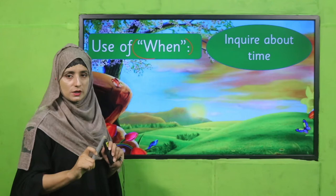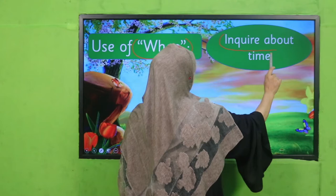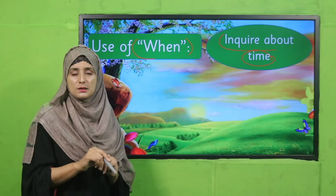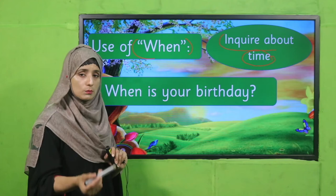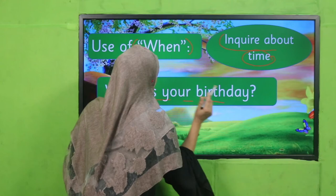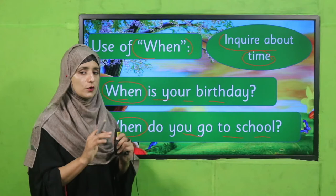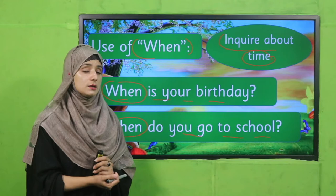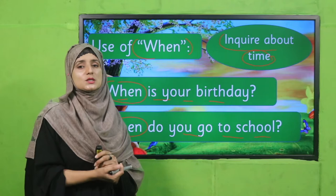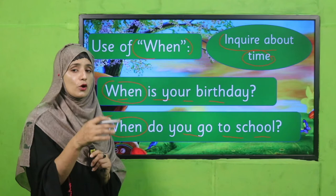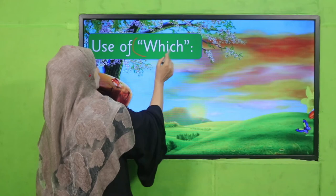Next is the use of 'when.' We use 'when' to inquire about time. Time can be about months, days, or numbers. For example: 'When is your birthday?' 'When do you go to school?' 'When do you get up early in the morning?' 'When do you go to the masjid?' So we are inquiring about time — on which time you are performing which type of activity. We use 'when' to inquire about time.